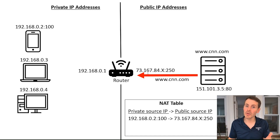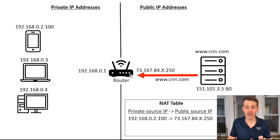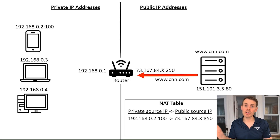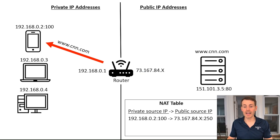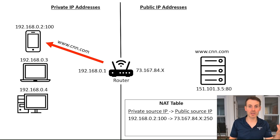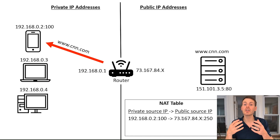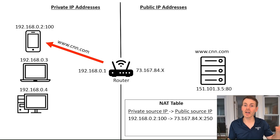CNN.com has no clue about any of the devices on your private network because it's only receiving the request from your router's public IP address. CNN.com returns the requested website to your router. Your router checks the NAT table, sees that responses to that public IP address and port 250 are mapped to your mobile device, and forwards the website back to the private IP address of your mobile device.